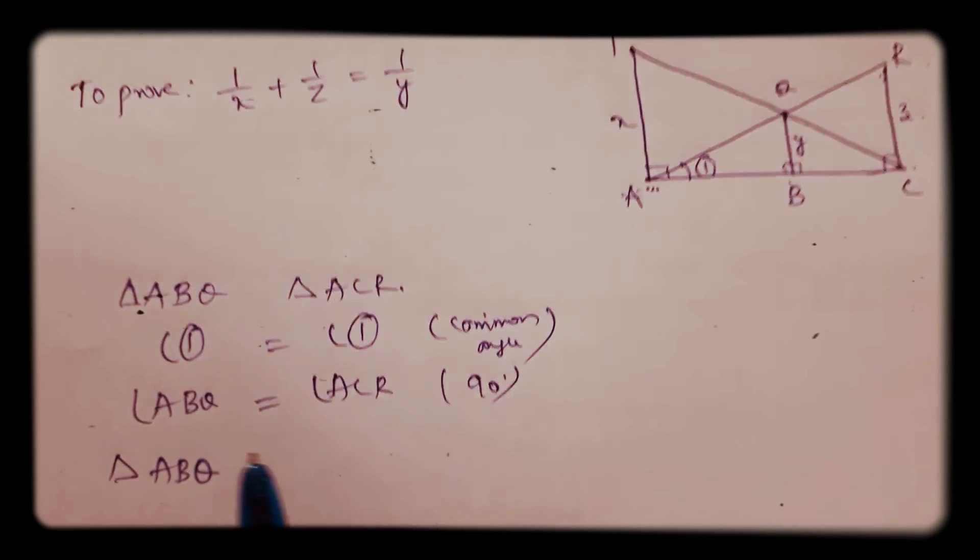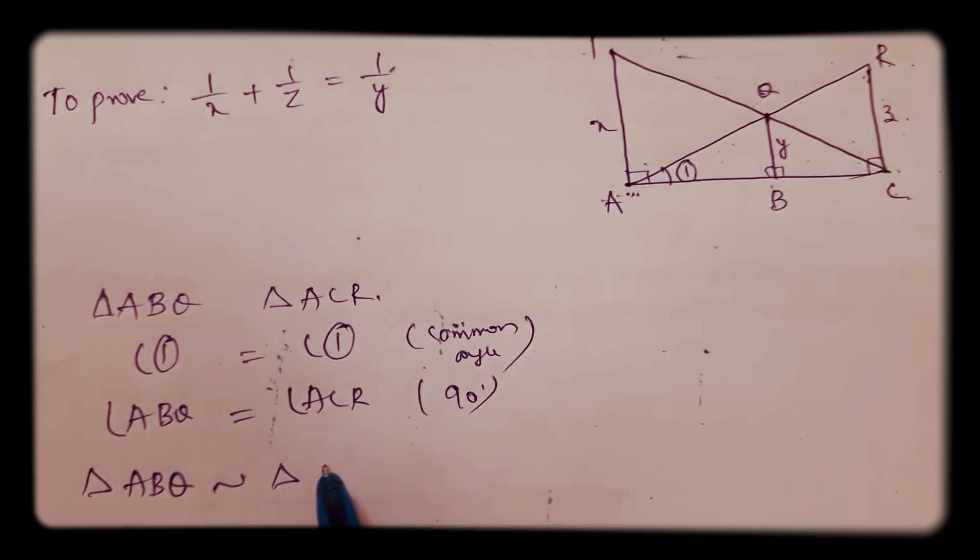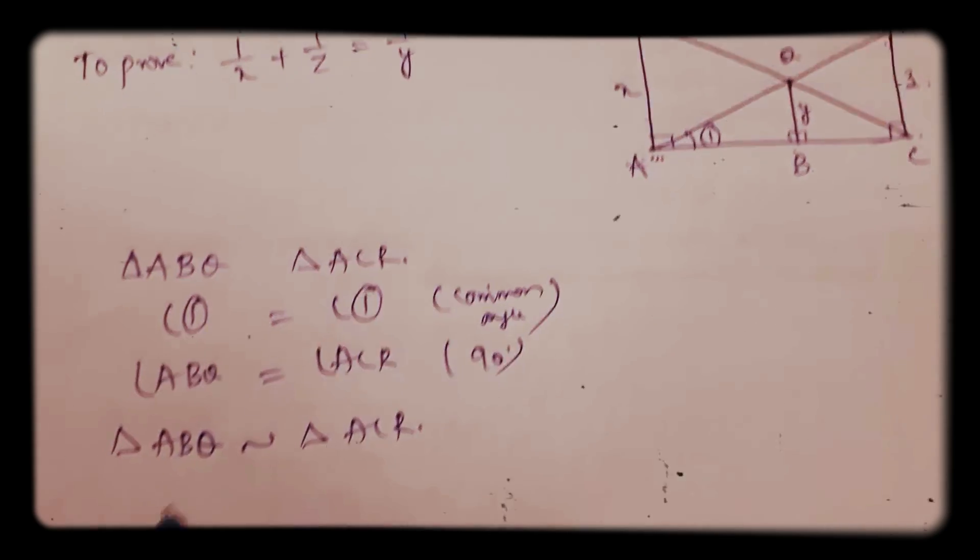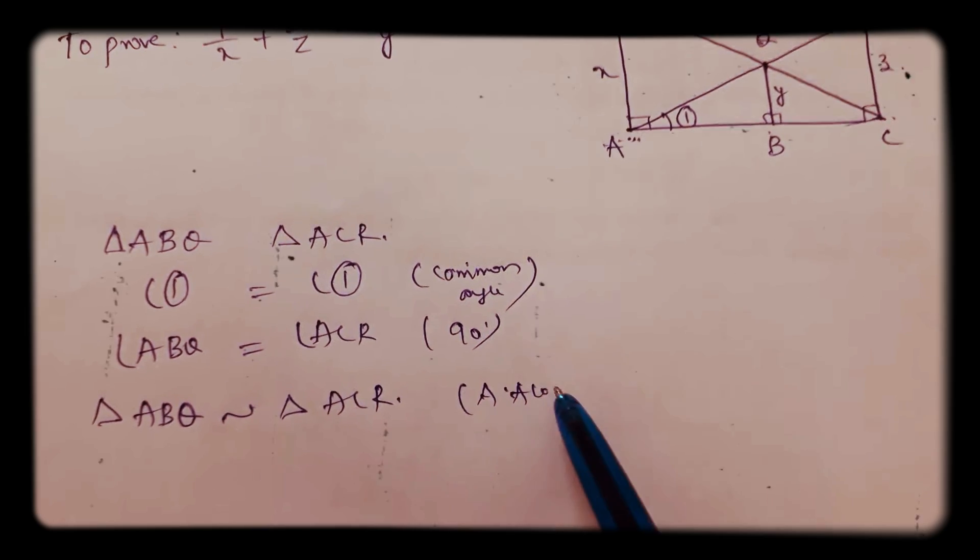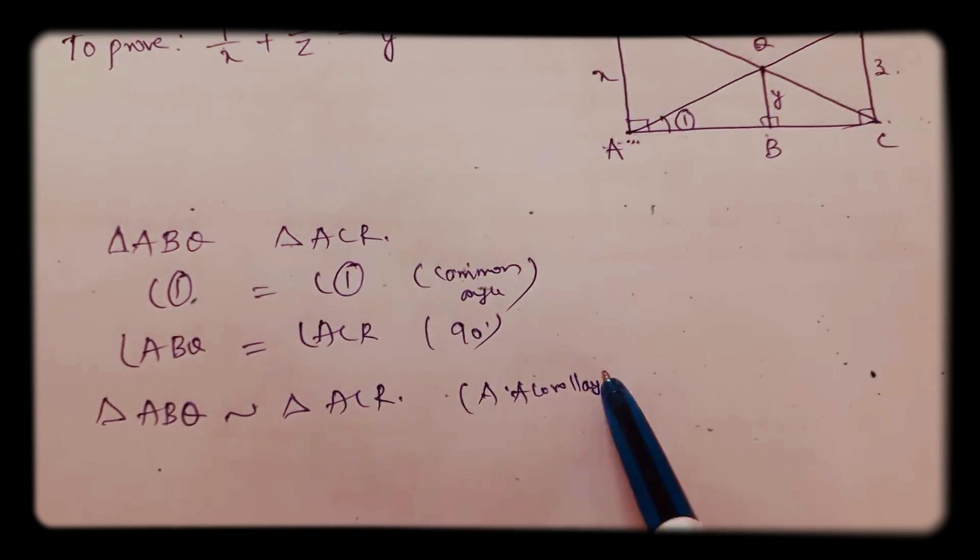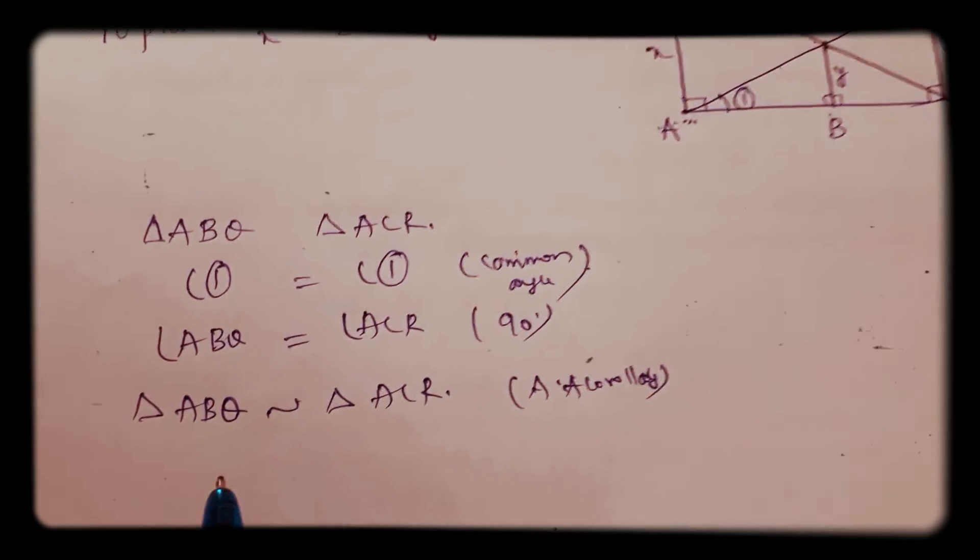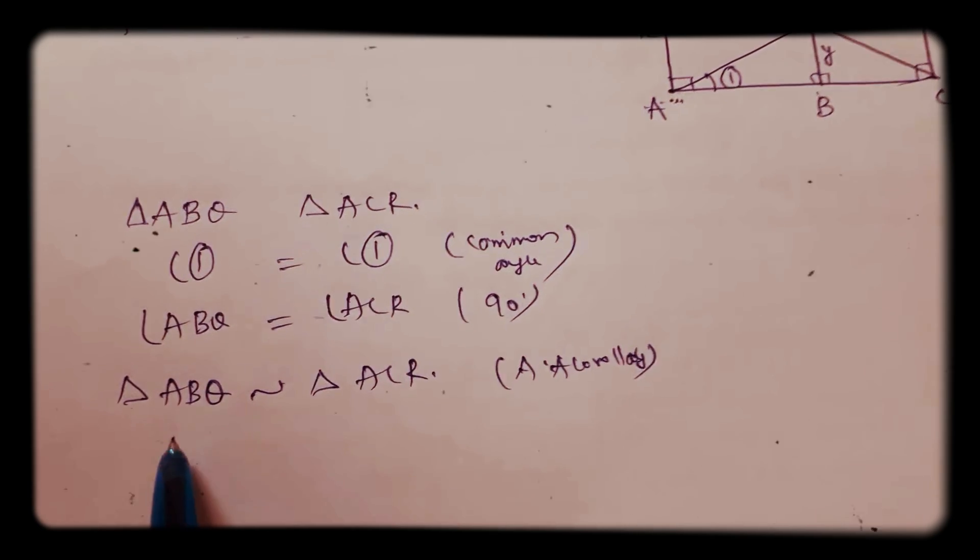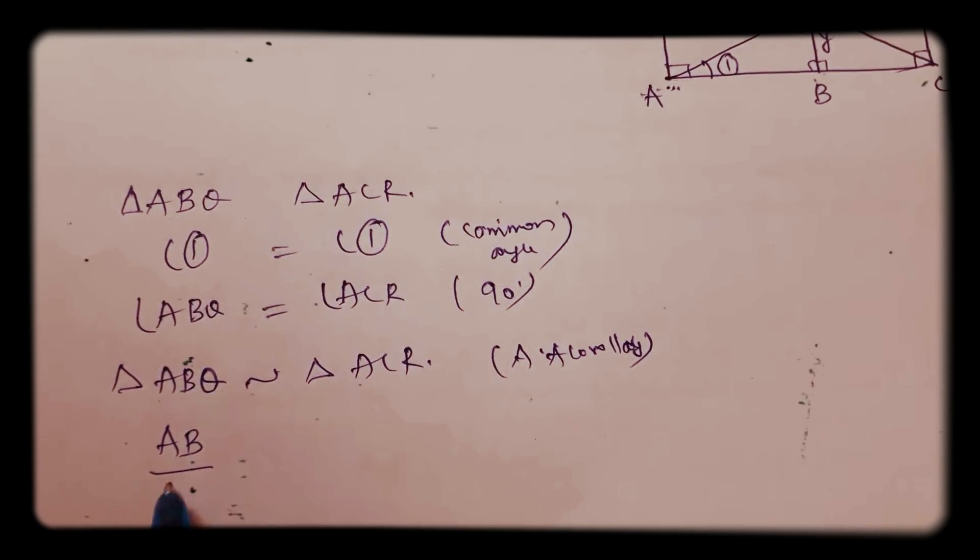So triangle ABQ is similar to triangle ACR by angle-angle corollary.